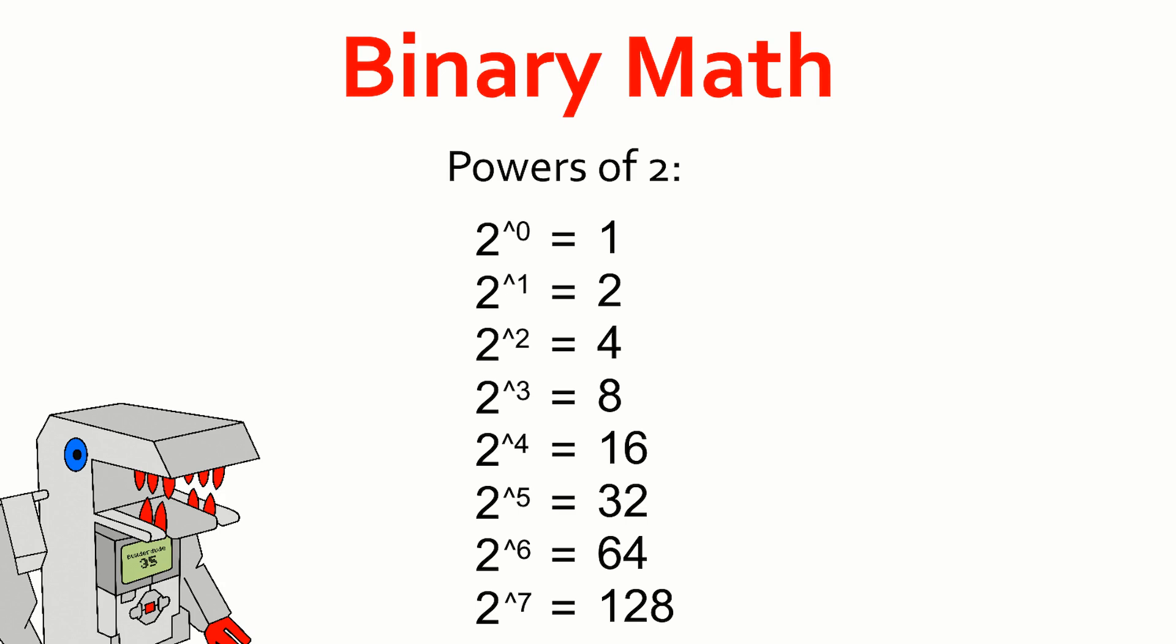The first thing that we need to talk about is binary math, which is how computers represent numbers. Humans represent numbers using a base 10 or decimal number system. Computers, on the other hand, use a base 2 number system in which numbers are represented using powers of 2. And in case you're rusty on your powers of 2, I put them all up here for reference.